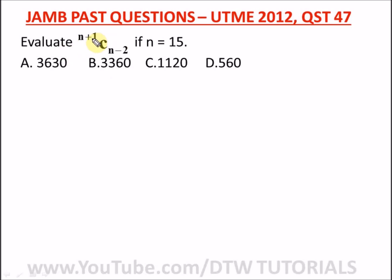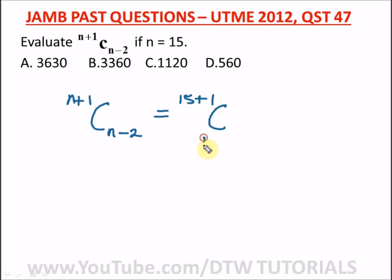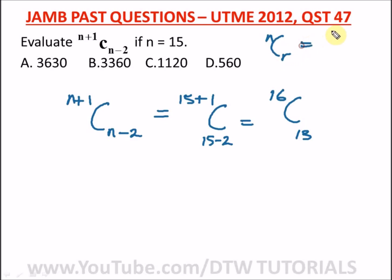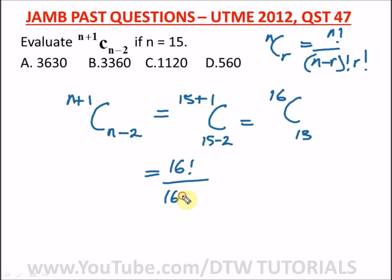Our next question, from JAMB 2012, question 47: evaluate this — if n equals 15, we have (n+1) combination (n−2). All you need to do is substitute n = 15: that gives 16 combination 13. Using the combination formula, we have 16 factorial over (16 minus 13) factorial times 13 factorial.